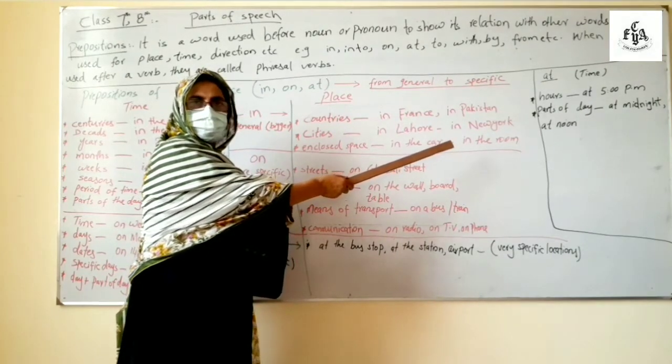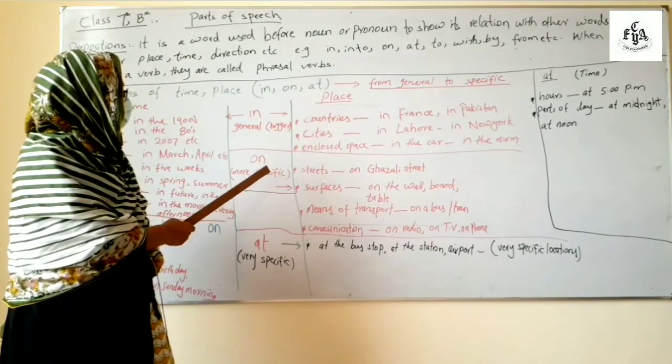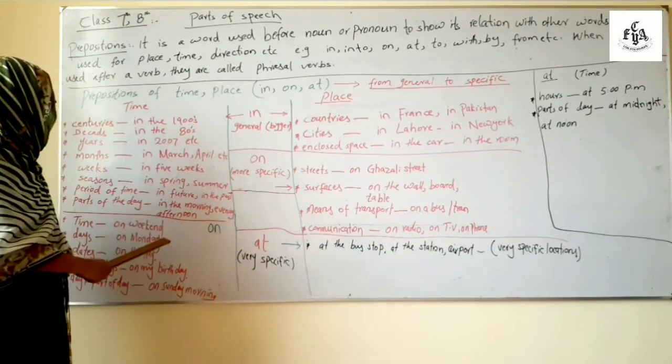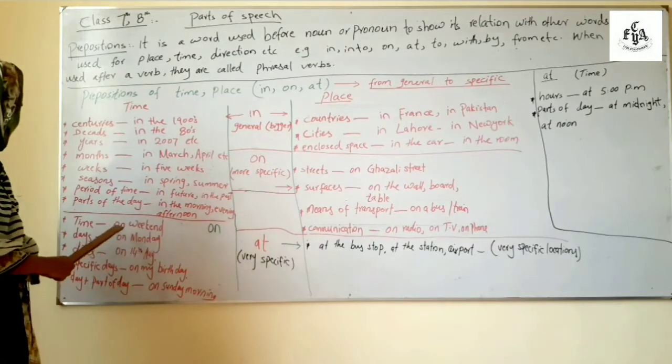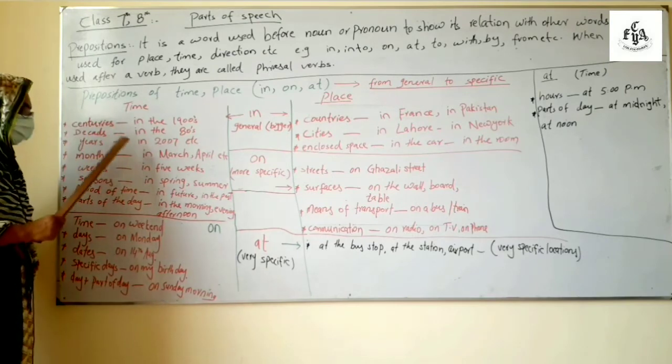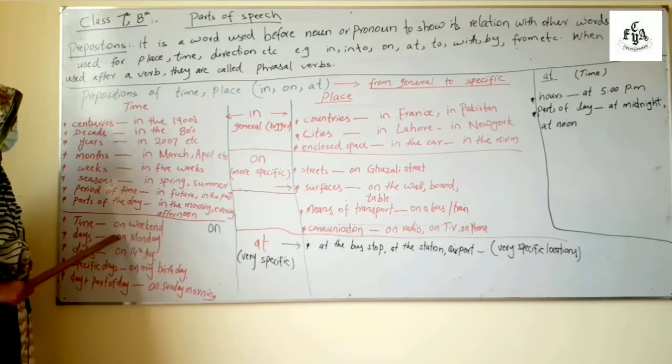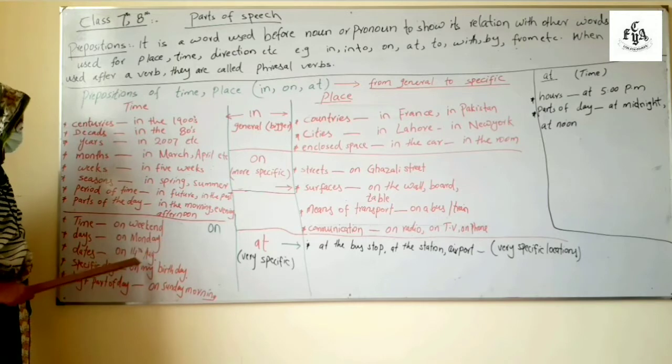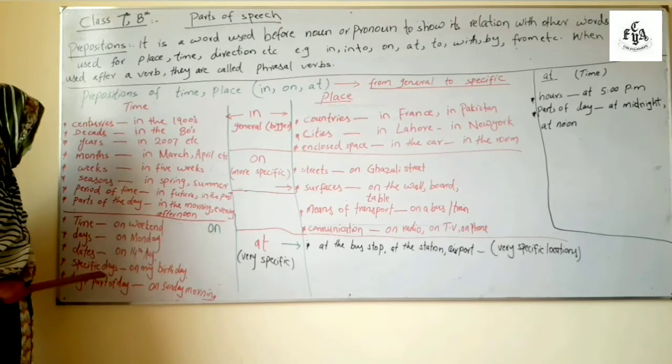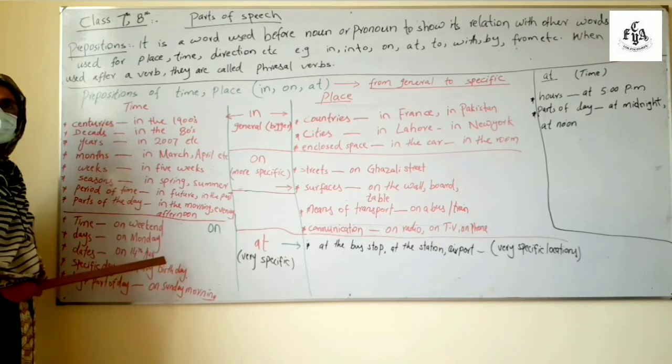Now it is the time of on. On is with respect to time for more specific time. We can see centuries, decades, years, months, that is larger time and this is specific time like on weekend days like on Monday, on Saturday.